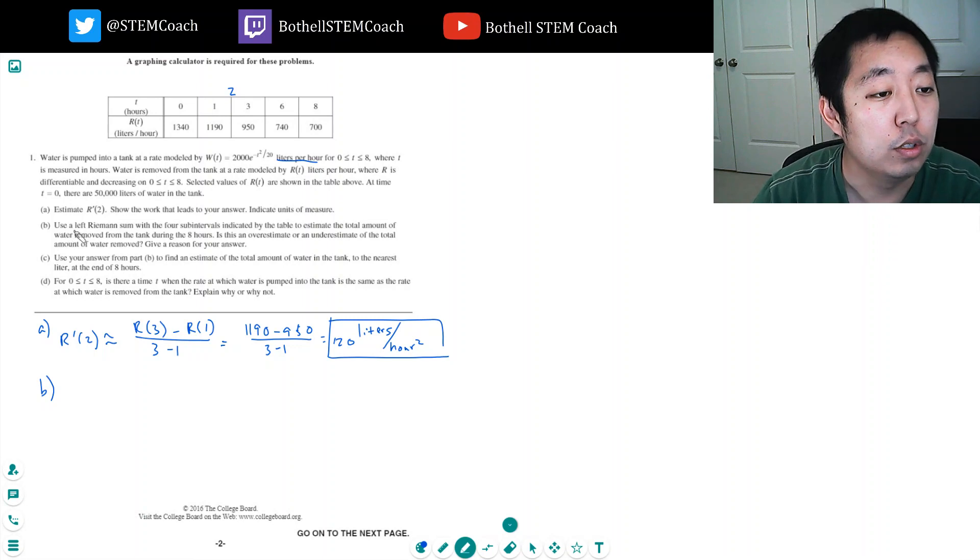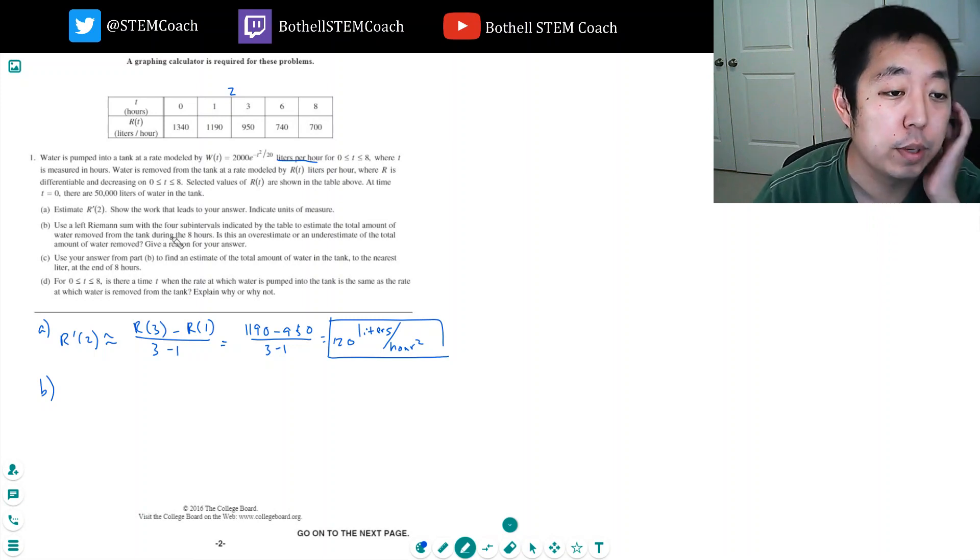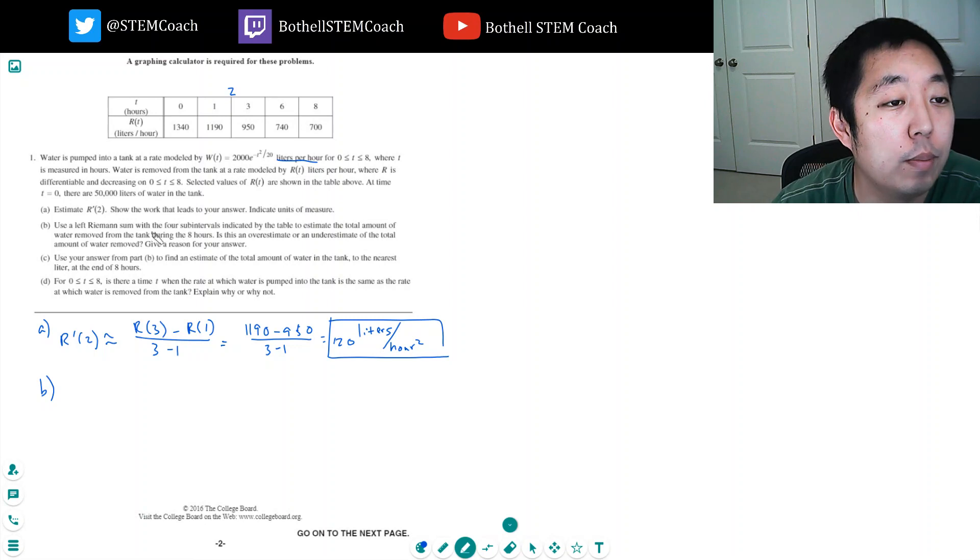Use the left Riemann sum with the four sub-intervals indicated by the table to estimate the total amount of water removed from the tank during the eight hours. Is this an overestimate or underestimate? We're using a left Riemann sum. The left points would be 0, 1, 3, and 6. There are four sub-intervals: 0 to 1, 1 to 3, 3 to 6, and 6 to 8.